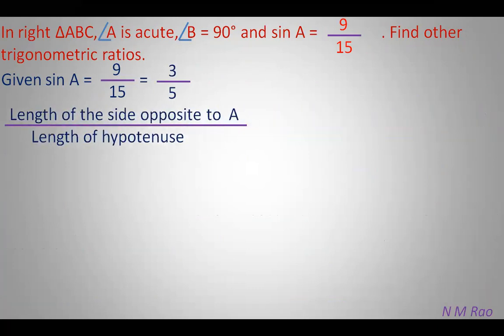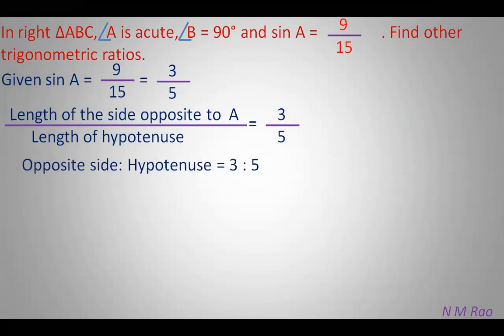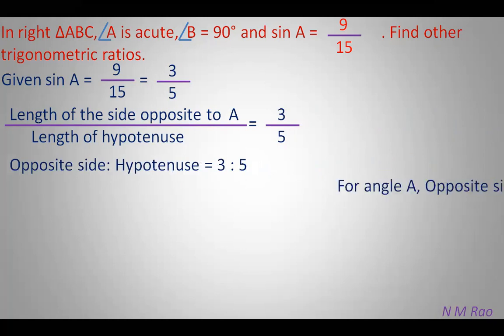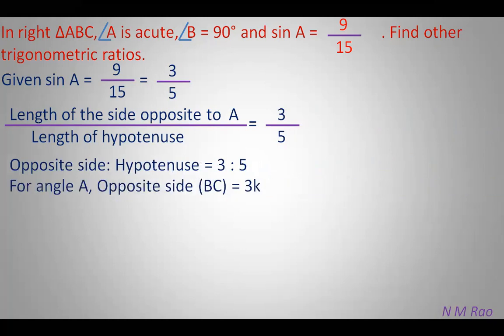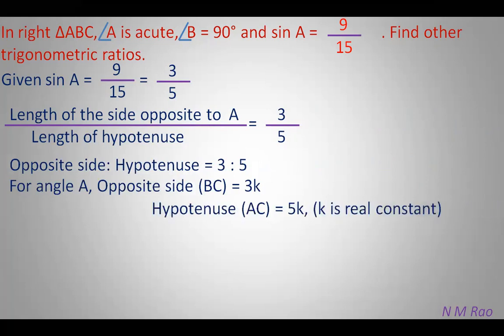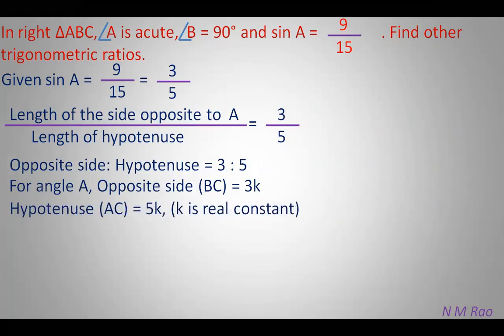Sin A is the ratio of the length of the side opposite to A divided by the length of the hypotenuse. For angle A, the opposite side is BC, so BC equals 3K and the hypotenuse AC equals 5K, where K is any positive real constant.